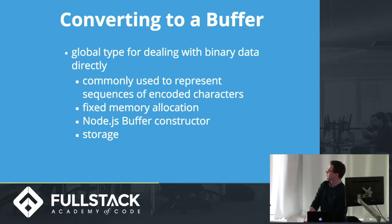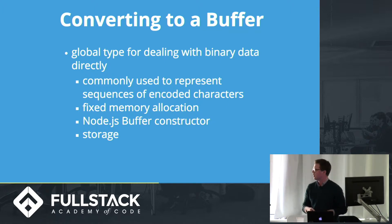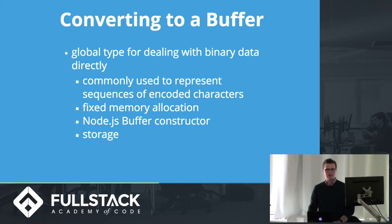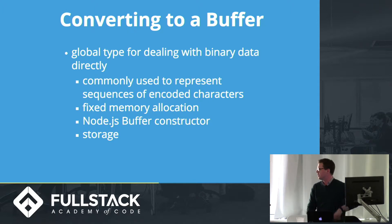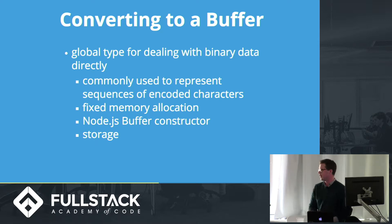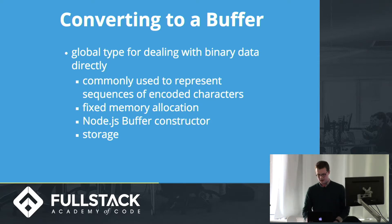The last thing to talk about is converting to a buffer. When you make your Ajax request and send your base64 string to your server side, you usually want to convert it to a buffer, because that's the best way to store binary data. A buffer is a global type for dealing with binary data, commonly used to represent sequences of encoded characters, and like an array it has some fixed memory allocation. Node.js gives us a buffer constructor that we can just use — give it the base64 encoded string, tell it what it's encoded in, and then use that to either store it, read it to a file, put it in Mongo, or send it to S3.